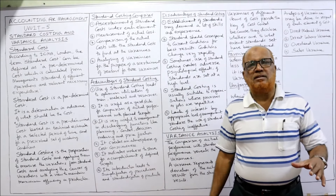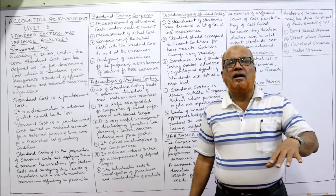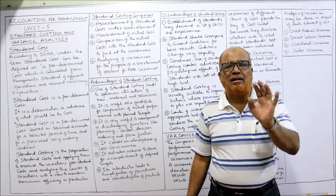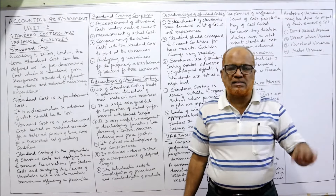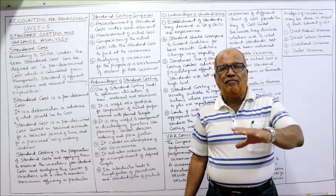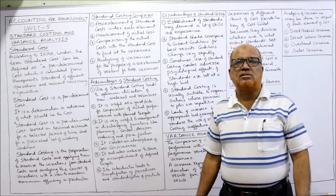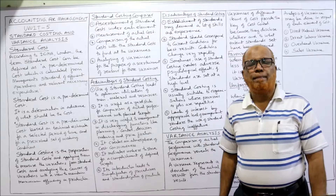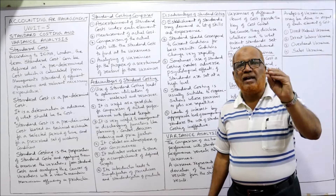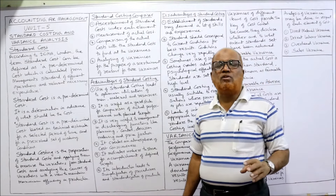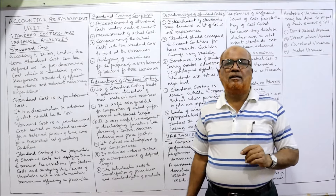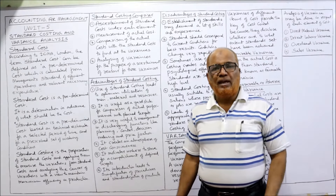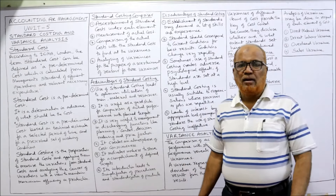For example: we have estimated that during the current year five lakh rupees worth of material will be consumed — this is the standard cost prepared last year. When we actually incur the material cost in the current year, it comes to six lakh rupees. The standard cost of material is five lakh whereas the actual cost comes to six lakh, so one lakh rupees more material has been consumed — the variation is one lakh.